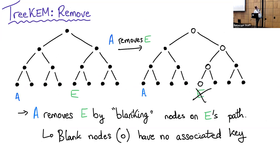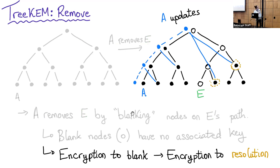Let me quickly go through how we handle removes, as this will be relevant later. If A wants to remove E, what she does is blank all the nodes on E's path. Blanking means these nodes will have no associated key, so E is effectively removed from the group. The effect of having a blank node is that if A now wants to update, she would want to encrypt to a blank node, so instead she must encrypt to something called the resolution — the smallest set of nodes so that all users in that sub-tree learn the new key. Effectively, having blank nodes degrades efficiency because more encryptions are needed.